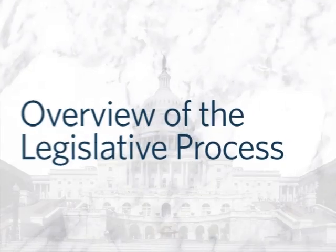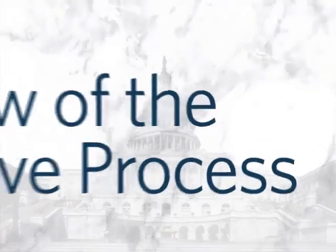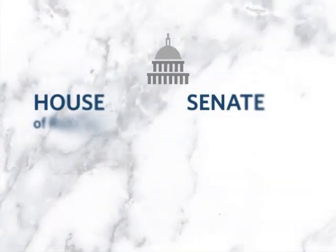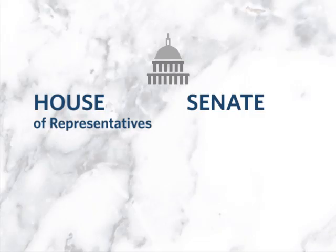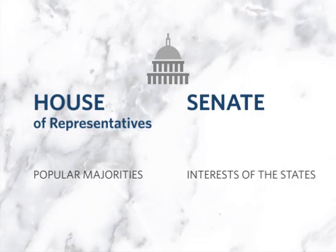Article 1 of the U.S. Constitution grants all legislative powers to a bicameral Congress — a House of Representatives and a Senate — that are the result of a great compromise seeking to balance the effects of popular majorities with the interests of the states.